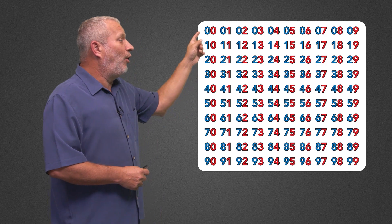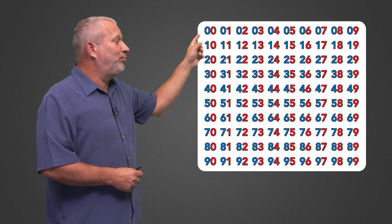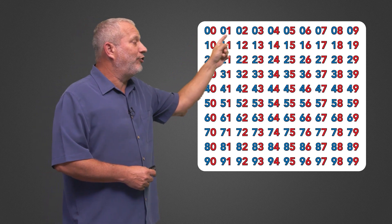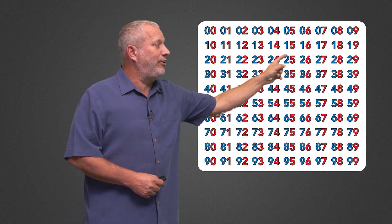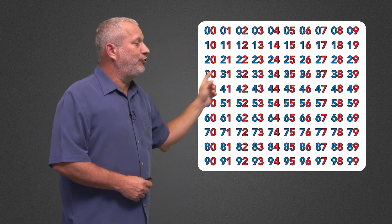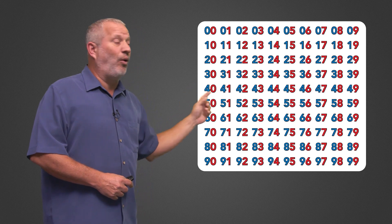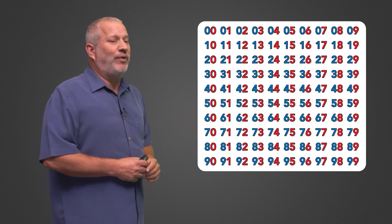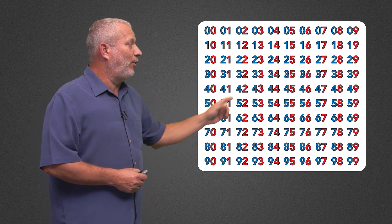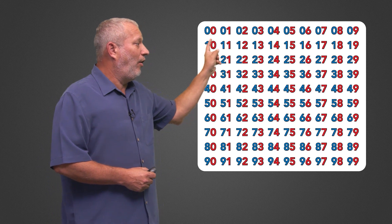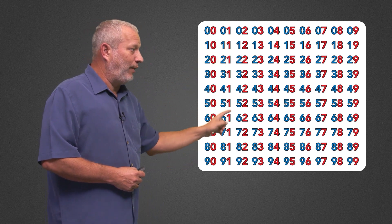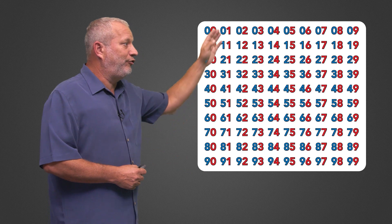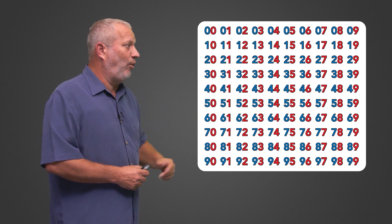Look at this first row right here — there's blue 0, all 0s, all blue across here. All the blue 1s are across this row. All the blue 2s, 3s, and so on. But now look at the red numbers, and you'll notice all the 0s go this way. All the 1s go this way in red. All the 2s go this way in red, and so on.